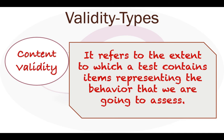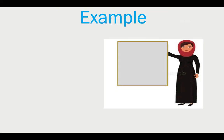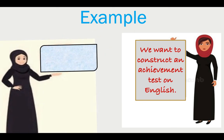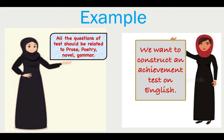Content validity of a test is estimated by evaluating the presence of the content to be assessed in the test paper. Suppose we want to construct an achievement test on English — all questions should be related to prose, poetry, novel, grammar, and so on, and all items must measure behavioral objectives like knowledge, understanding, application, analysis, synthesis, and evaluation.